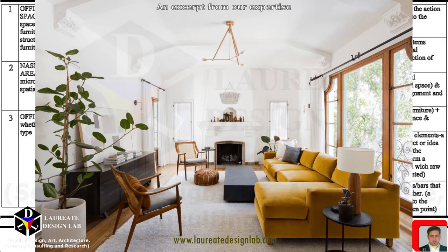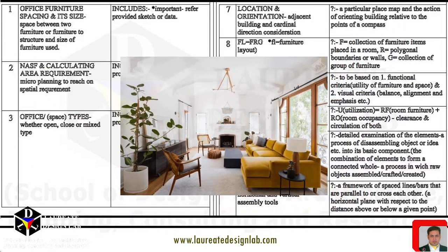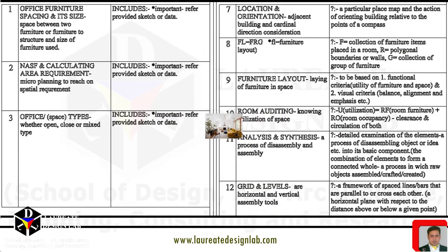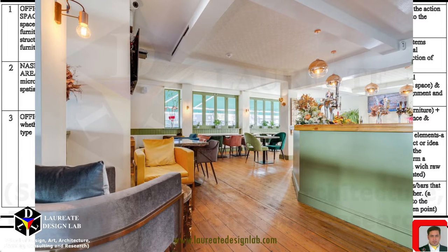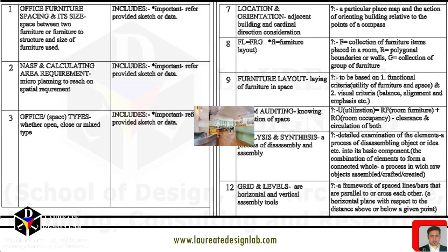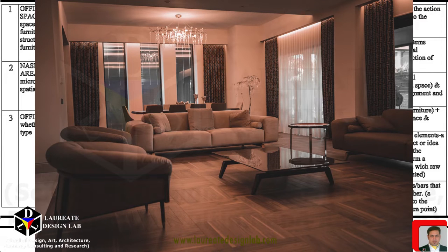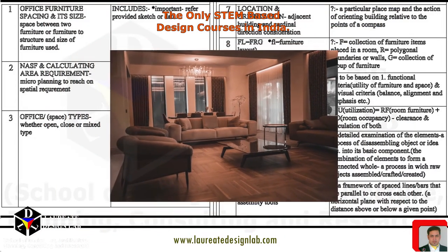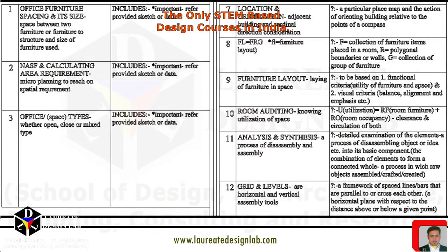Furniture spacing refers to the amount of space that is left between pieces of furniture in a room. This space is important because it affects the overall feel and functionality of the room. Proper furniture spacing allows for easy movement and circulation, while also creating a sense of balance and harmony in the space. When determining the amount of space to leave between pieces of furniture, it is important to consider the size of the furniture. In general, larger pieces of furniture will require more space, while smaller pieces can be placed closer together.